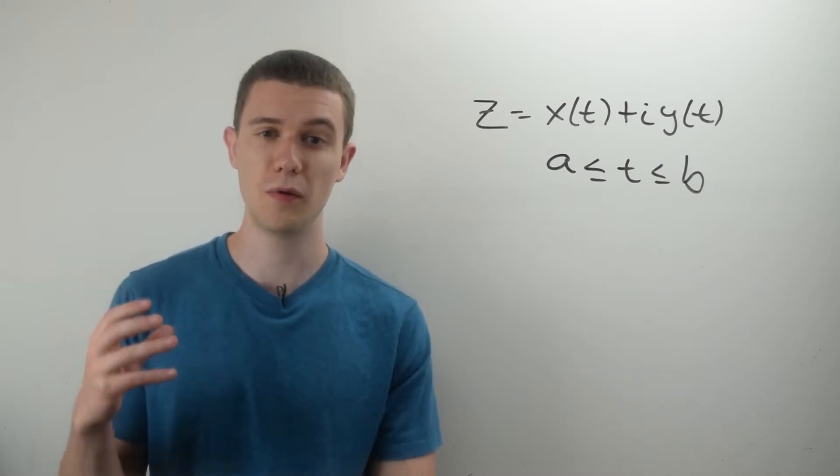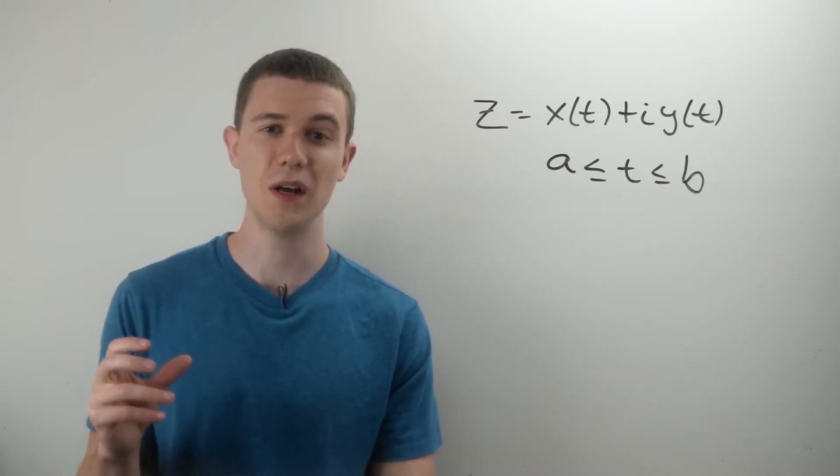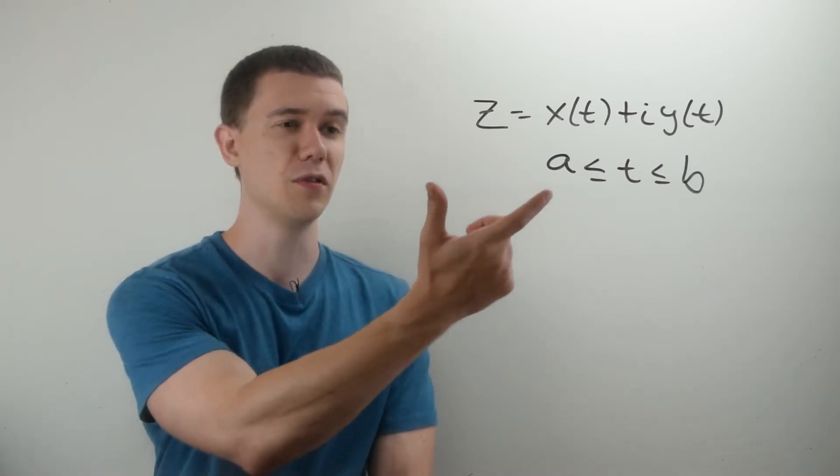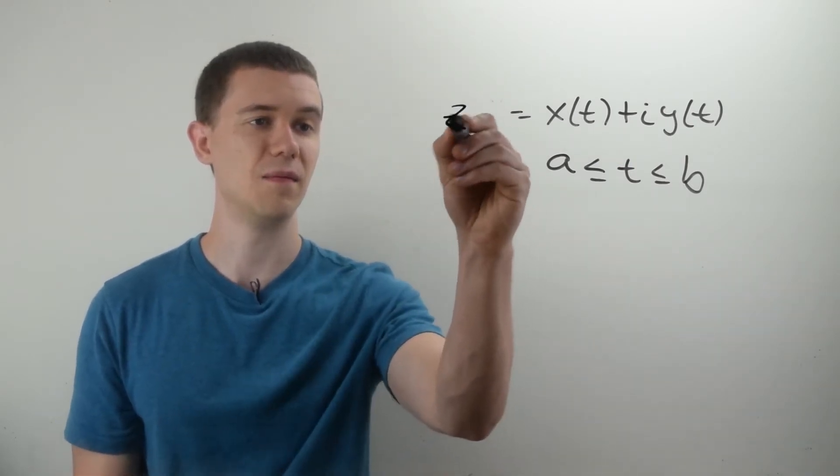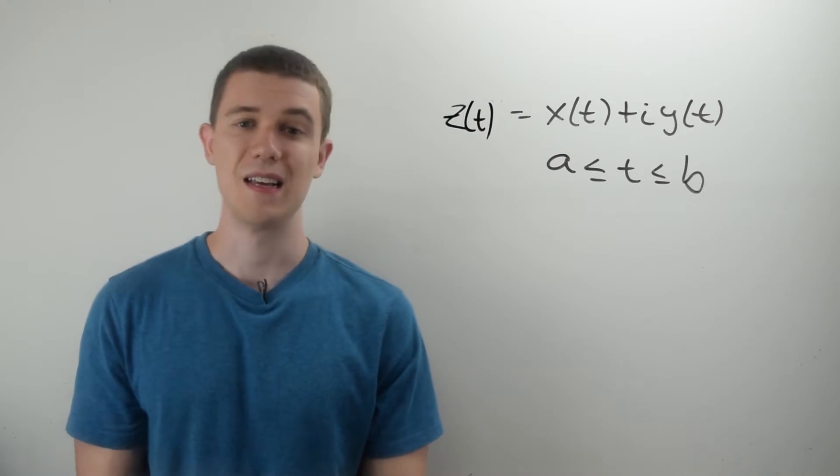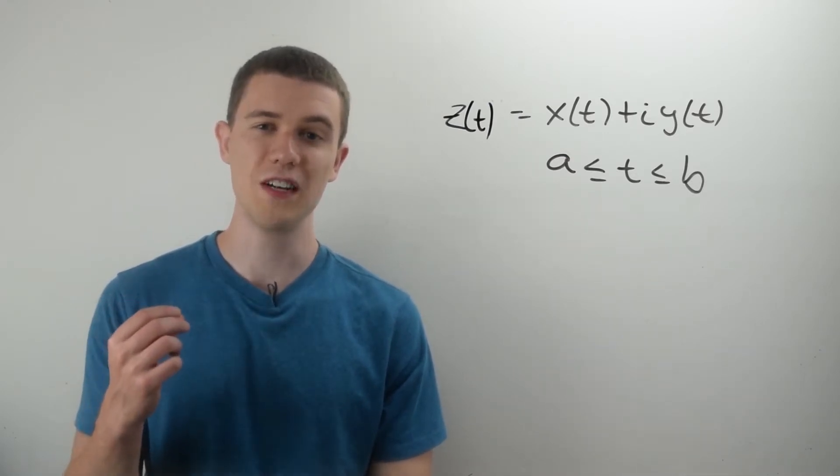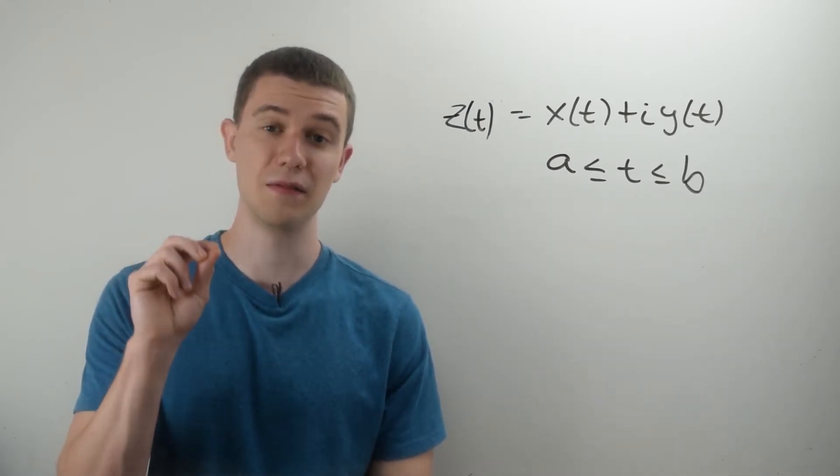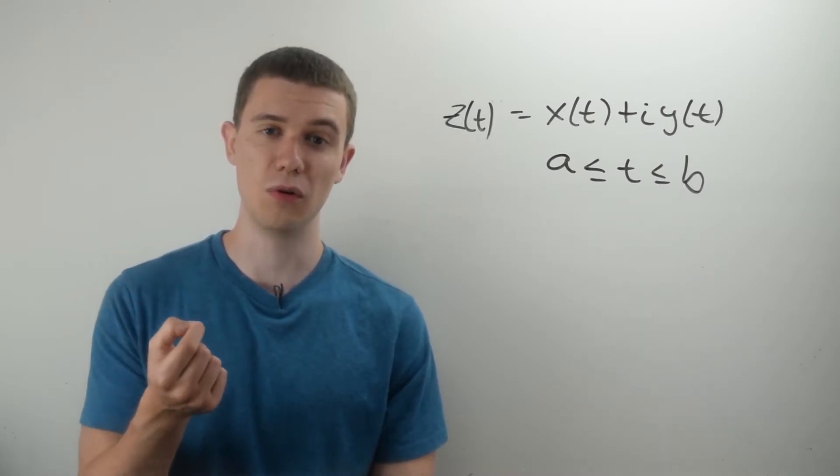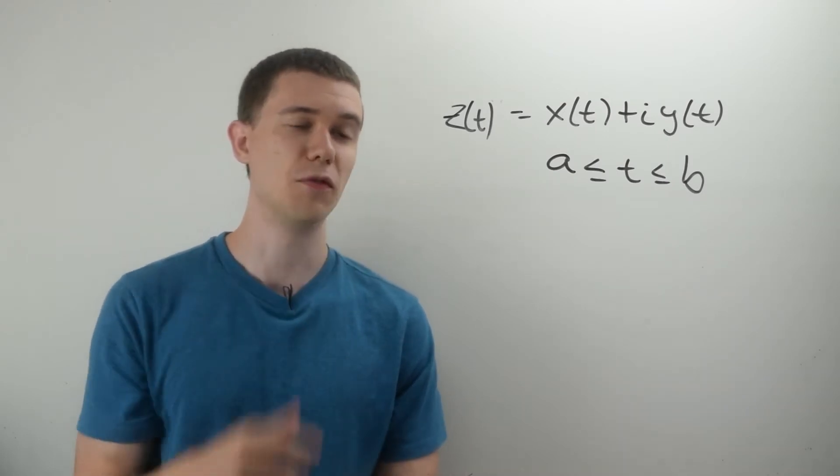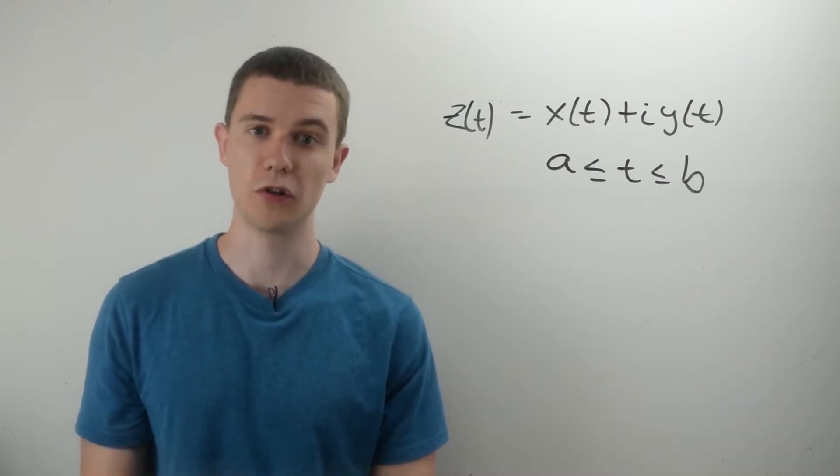If you've taken Calc 2, you'll be familiar with the idea of a parameterization. Basically, a parameterization Z, or rather Z of T, is a complex parameterization of x(t) plus i times y(t), where T is a real variable varying over some interval a to b, and this is the form of a complex parametric curve.